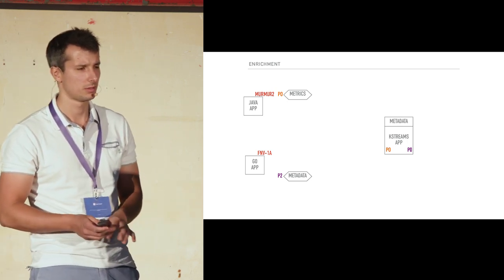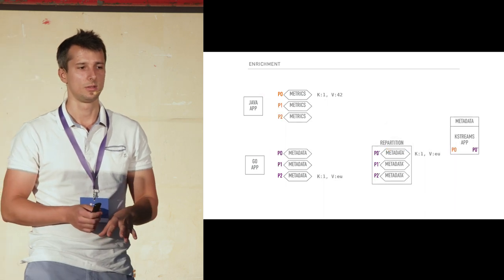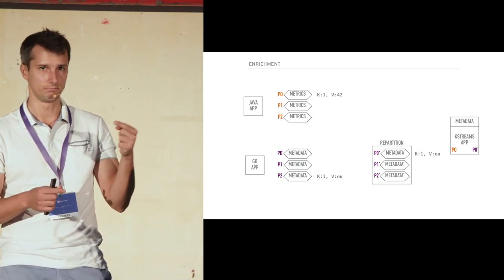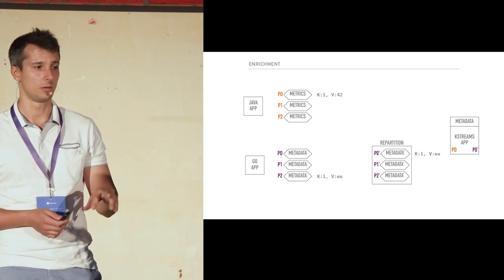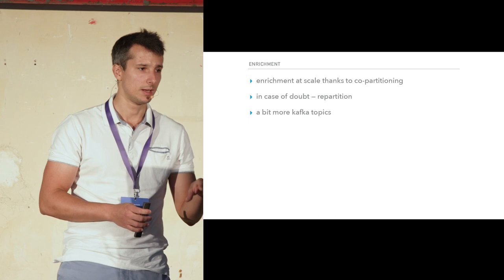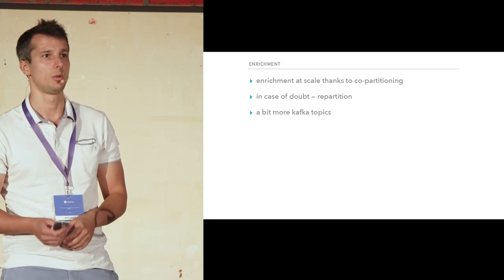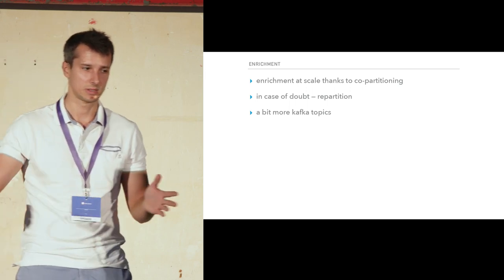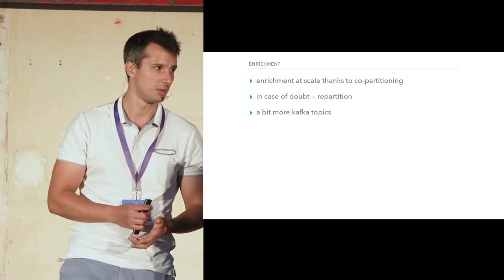Kafka Streams helps here — it introduces the operation of re-partitioning. It takes all your data and re-partitions it with the correct hash function, so your metadata ends up in partition 0 as it's supposed to, and the match happens. With co-partitioning, we can do enrichment at scale because we only need to read one partition from each topic, so we scale with the number of partitions. In cases of doubt, Kafka Streams will happily re-partition all your data for you. The only trick is there are going to be a few more Kafka topics.